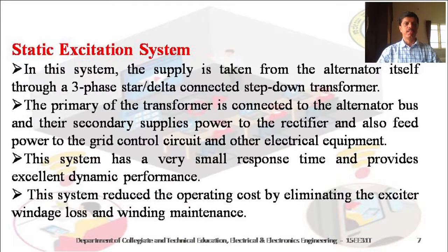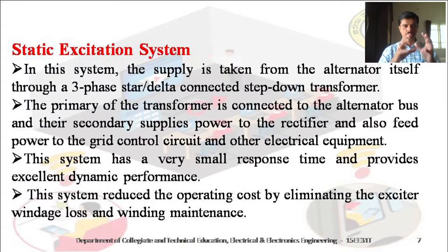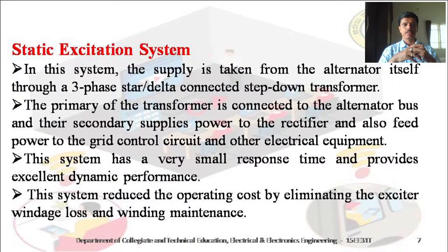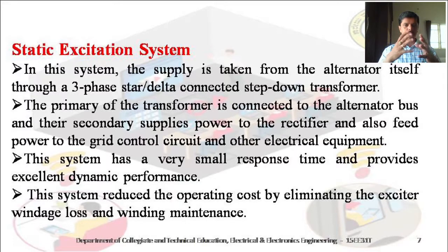In the static excitation system, the name itself indicates that static means stationary — there are no rotating parts. All parts are in stationary conditions. In a static excitation system, the supply is taken from the alternator itself through a three-phase star-delta connected step-down transformer. We connect a step-down transformer or a star-delta transformer and step down the voltage, which is then supplied to the rectifier circuit.